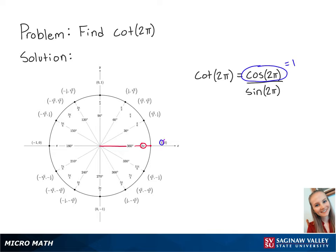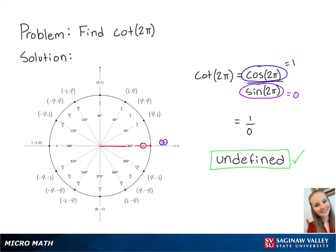Sine correlates to the y-coordinate on the unit circle, so sine of 2π is equal to 0. So cosine of 2π over sine of 2π is equal to 1 over 0. Since we can't have 0 in the denominator, cotangent of 2π is undefined. And this is the final answer.